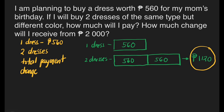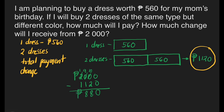If we pay 1,120 pesos at the cashier, how much change will we get from 2,000? We subtract 1,120 from 2,000. 0 minus 0 is 0. 0 minus 2 cannot be done, and we cannot borrow from the next 0, so we borrow from 2 — the 2 becomes 1, the first 0 becomes 9, and the second 0 becomes 10. So 10 minus 2 is 8, 9 minus 1 is 8, and 1 minus 1 is 0. The change is 880 pesos.